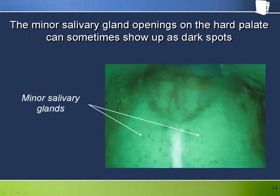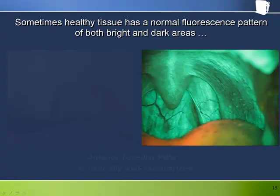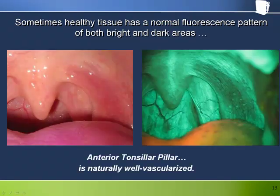The minor salivary gland openings on the hard palate can sometimes appear as dark spots when using Velscope. The anterior tonsillar pillars can be particularly well vascularized and therefore can appear quite dark with fluorescence. Notice how the reddened areas under white light correspond to the darkened areas through the Velscope.